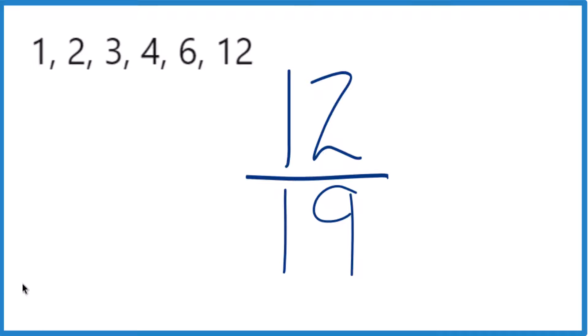But for 19, for 19, the only thing we've got is 1 times 19, that equals 19. But there aren't any other factors.